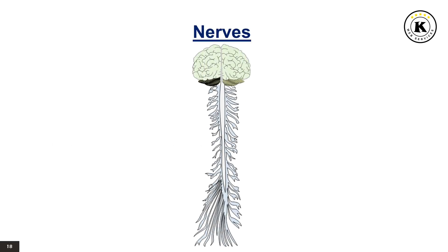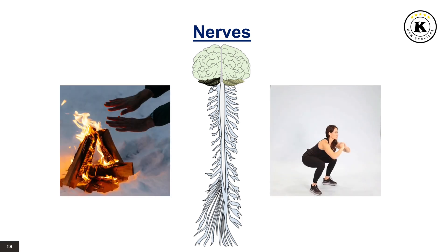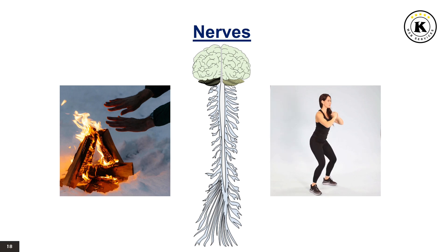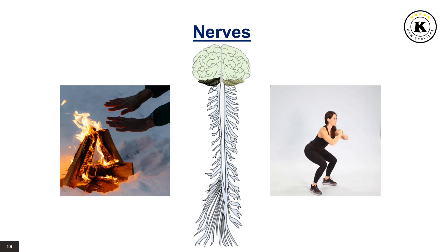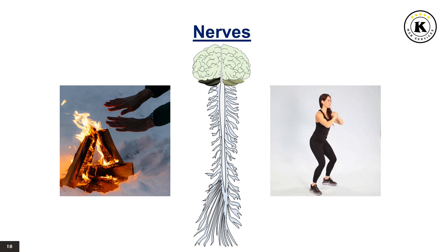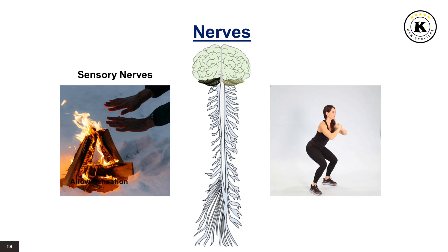Nerves. Nerves are like cables that carry electrical impulses between your brain and the rest of your body. These impulses help you feel sensations and move your muscles. They also maintain certain autonomic functions like breathing, sweating, or digesting food. Nerve cells are also called neurons. There are two types of nerves: sensory nerves, which allow sensation, and motor nerves, which allow movement.